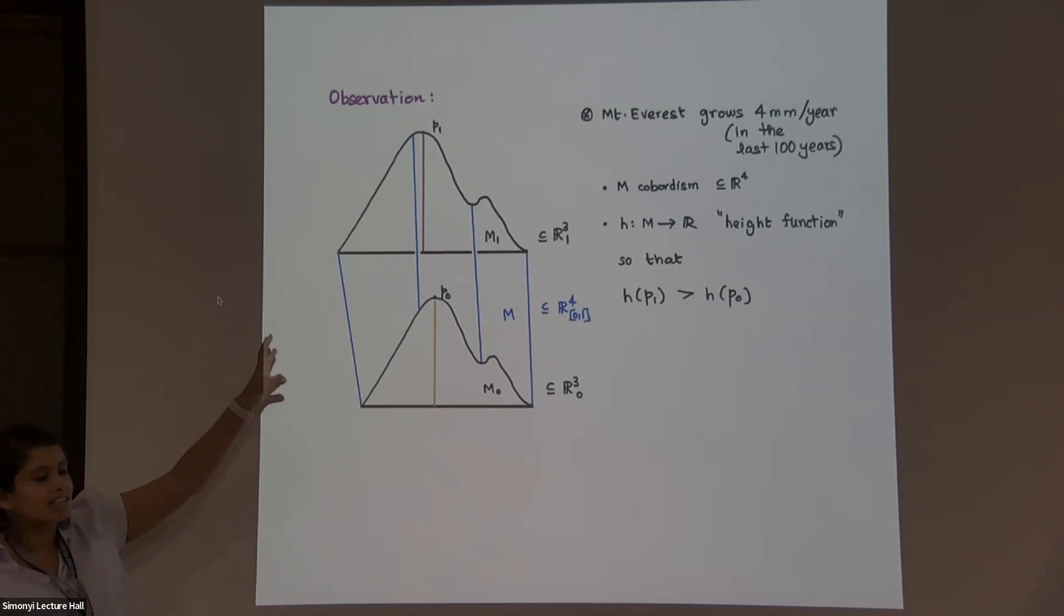So this is a four dimensional object with boundary, which is two copies of Mount Everest. And there's a height function which measures height from sea level, such that peak at time zero and peak at time one, and the height of peak at time one is higher than height of peak at time zero. I like this language better.